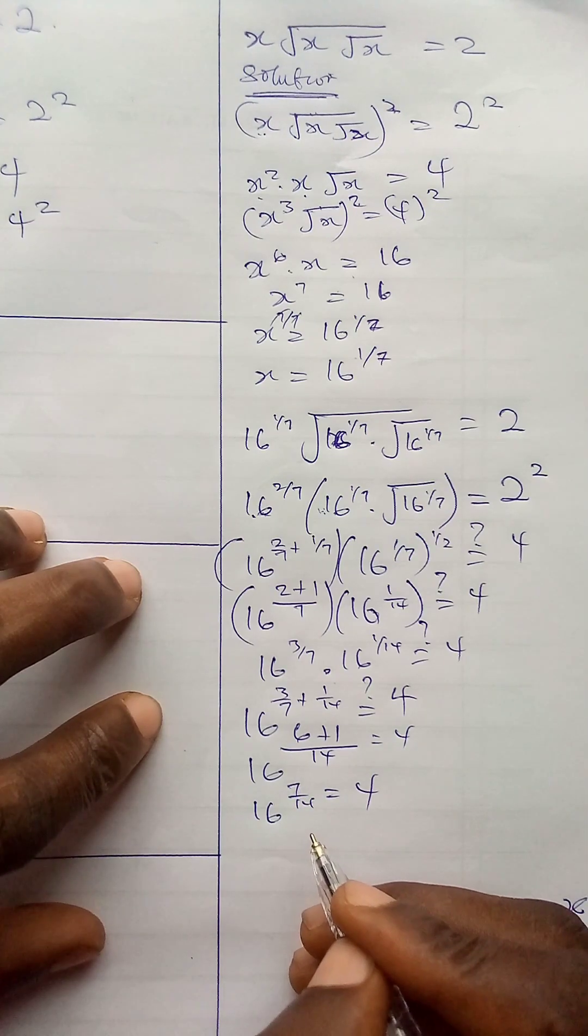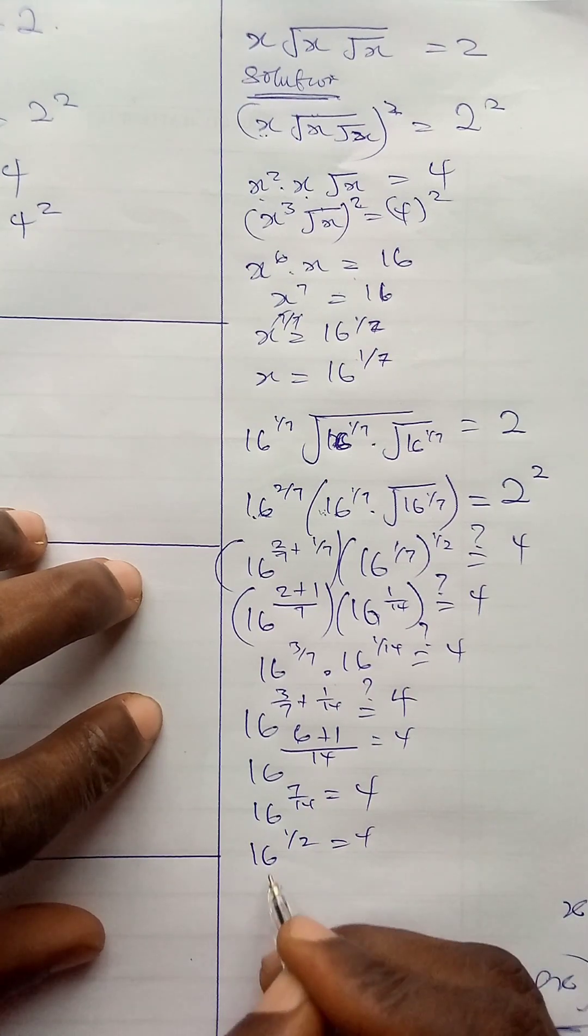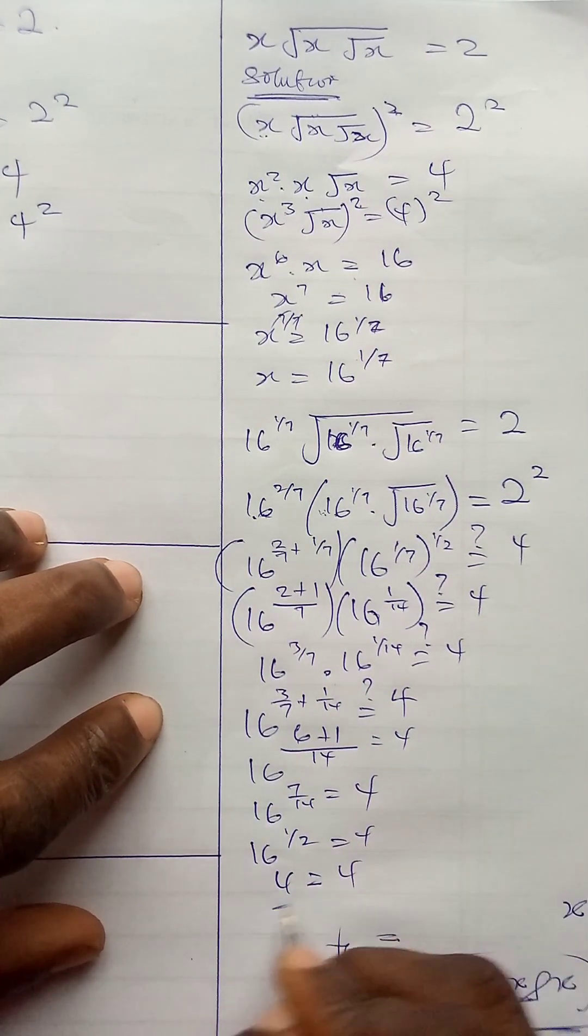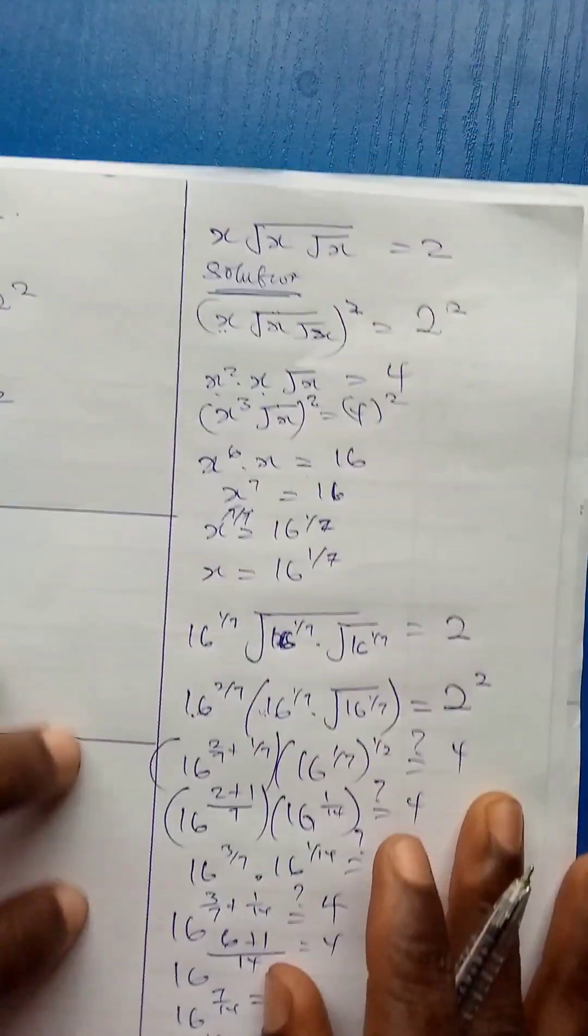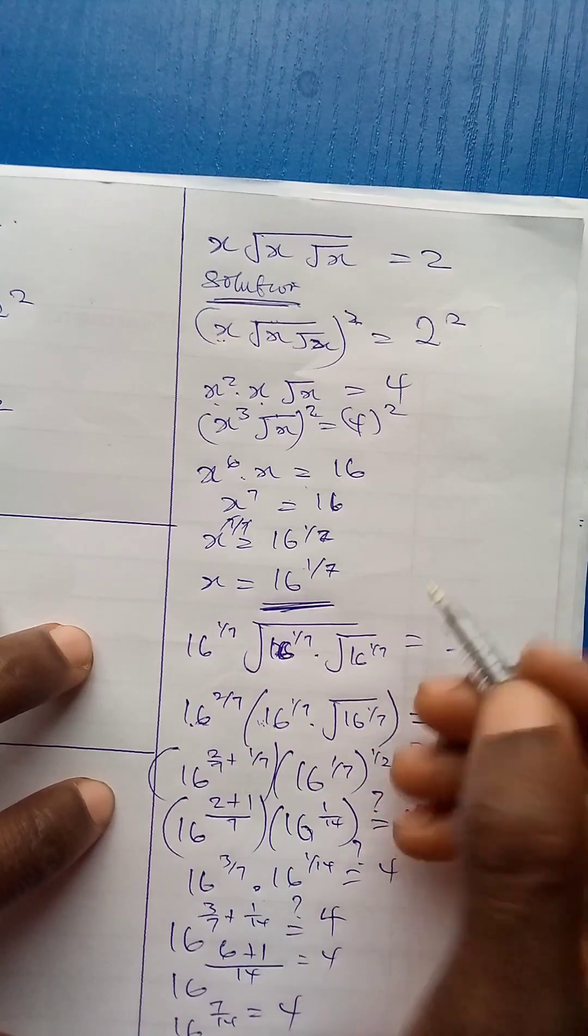Yes, 16 to power 1 over 2 is 4, which is equal to 4. So, our solution, x is equal to 16 to power 1 over 7, is correct.